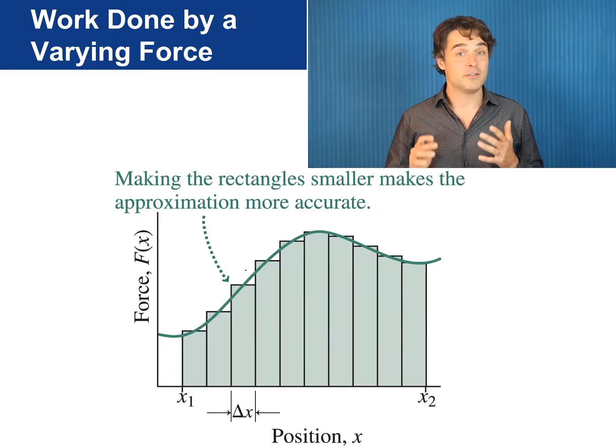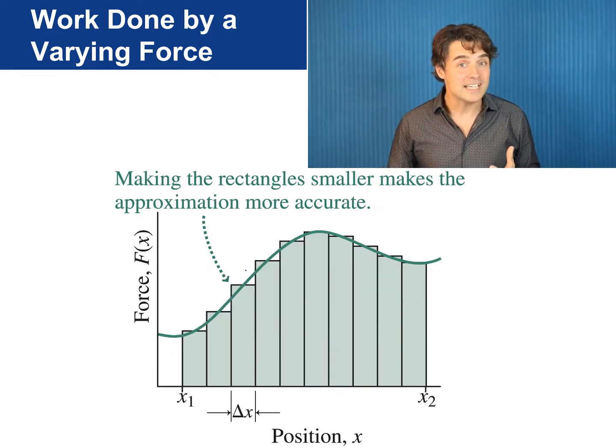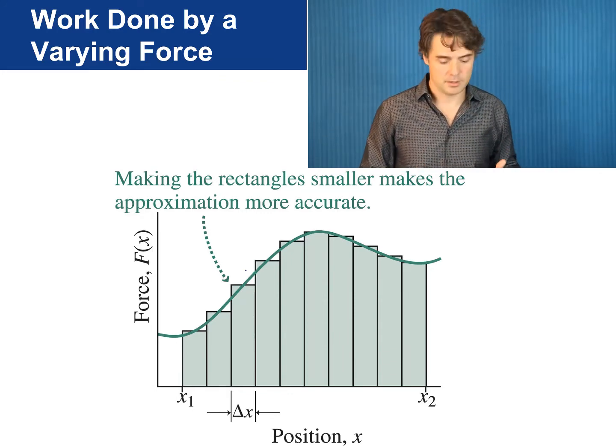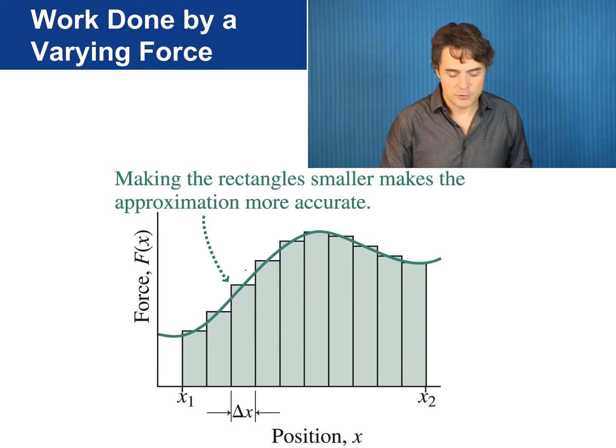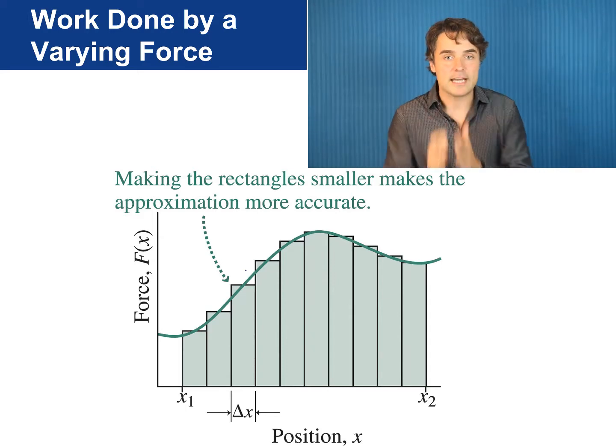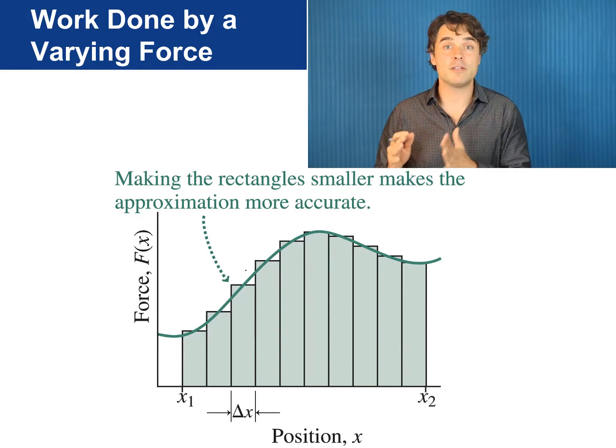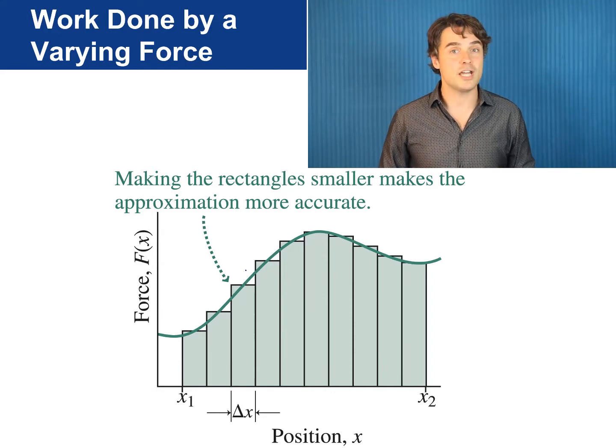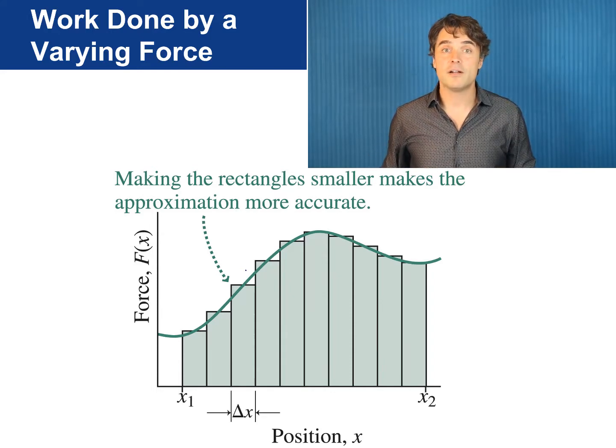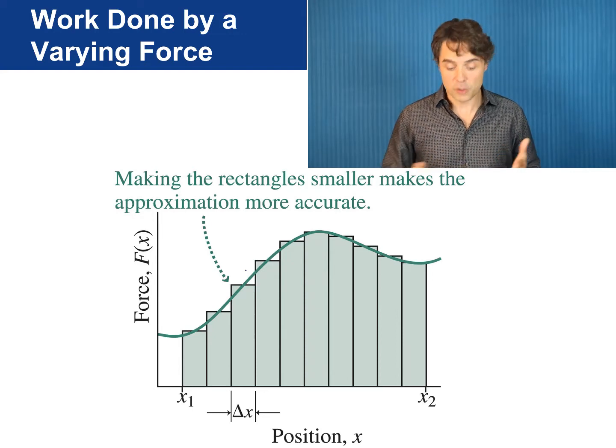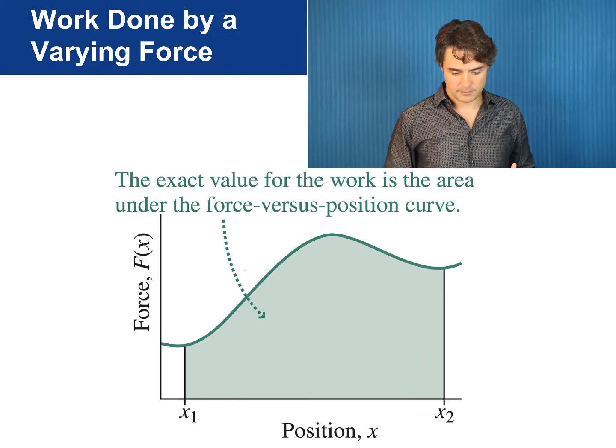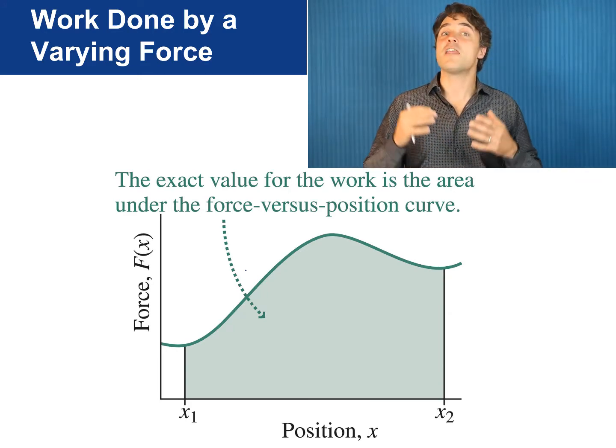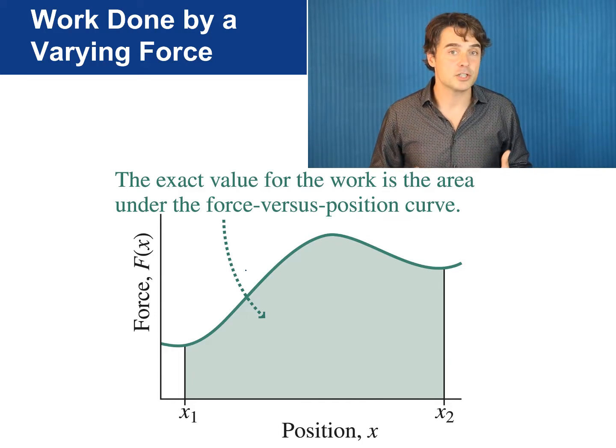Next if you want to get more precise the trick is to make the rectangles narrower and use more of them. You can imagine that if you had millions of tall skinny rectangles like this the sum of the areas of all these rectangles would be very close to the area of the actual curvy shape. And this area would be the total work done by the force over the total distance. So that's it. The exact value for the work done by the force is the area under the force versus position curve.